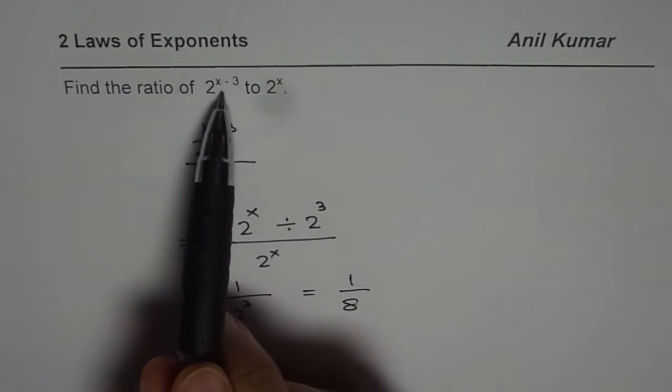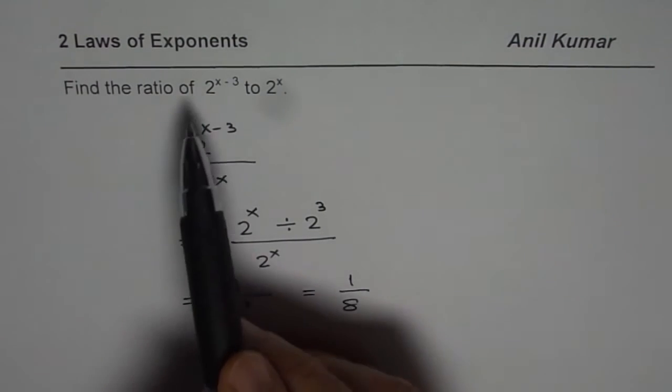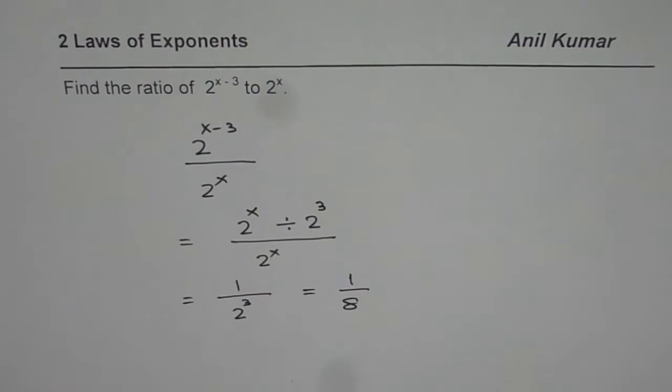Therefore 2 to the power of x minus 3 to 2 to the power of x is 1 over 8. So this expression is 1 eighth of 2 to the power of x. So that is how you should do it.